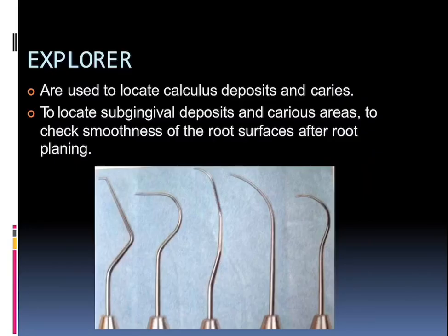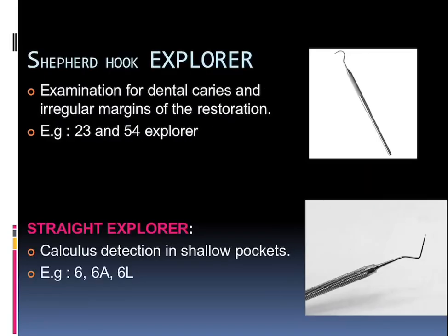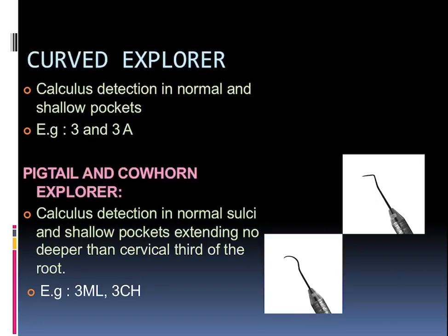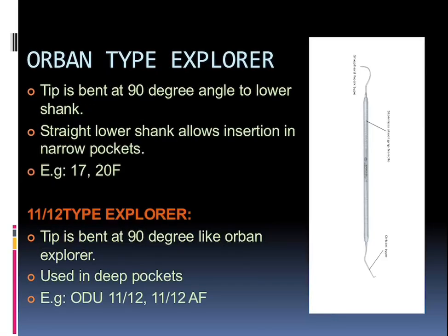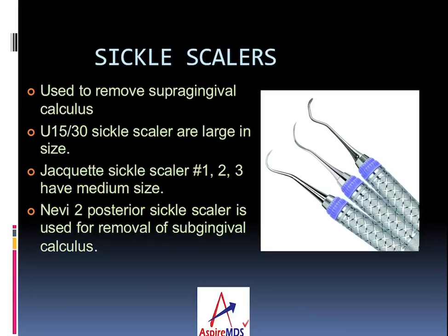The explorers are used to locate calculus deposits and caries, to locate subgingival deposits and caries areas, and to check the smoothness of the root surface after root planing. The Shepherd's hook — normal explorer — is for examination of dental caries and irregular margins of restorations. Straight explorers are for calculus detection in shallow pockets. Curved explorers are for calculus detection in normal and shallow pockets. Pigtail and cowhorn calculus explorers are for calculus detection in normal sulci and shallow pockets extending deeper than the cervical third of the root. The ODU 11/12 type explorers have the tip bent 90 degrees to the lower shank and are used in narrow and deep pockets.